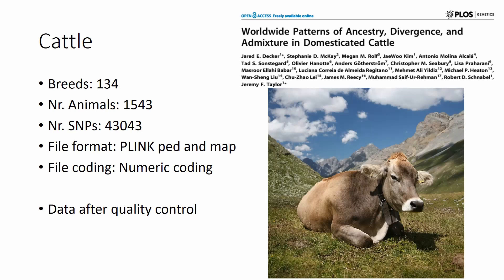Another rather famous dataset is published in PLOS Genetics, with 134 breeds of cattle and more than 1,500 animals genotyped with a 50k SNP chip, but after quality control only 43,000 SNPs remain. The file format is PLINK PED and MAP with nucleotide coding.